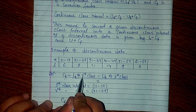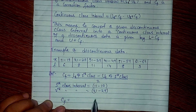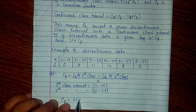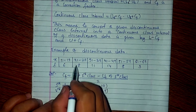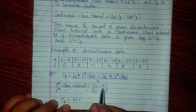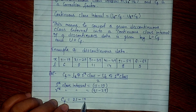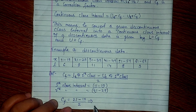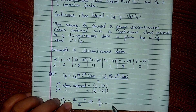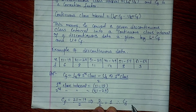So, the lower limit of the second class is 21, and the upper limit of the first class is 19. Therefore, CF equals 21 minus 19, divided by 2, which equals 2 divided by 2, which equals 1. The correction factor is 1.